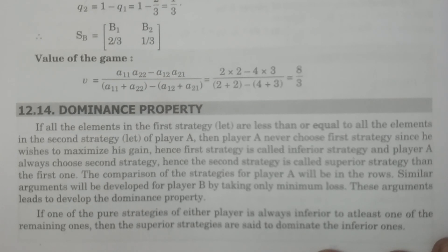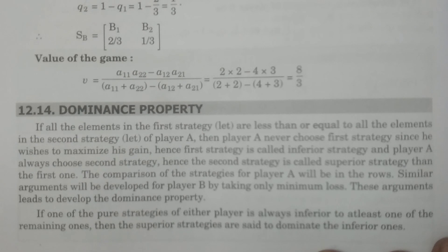For example, player A has two strategies A1 and A2. Strategy A1 gives 4 rupees of gain to player A, and strategy A2 gives 5 rupees gain for player A. Then which strategy will player A select? Always A2, because of the 5 rupees gain — more gain.